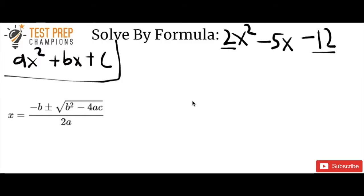Hi everybody, this is Parker from testprepchampions.com. Here's another GED math practice problem of the day. This one is also like yesterday's — it has to do with the quadratic formula and quadratic equations. I want you to solve 2x squared minus 5x minus 12, but I want you to do it using the quadratic formula instead of using factoring like we did yesterday.